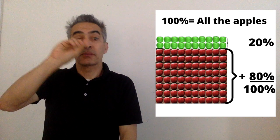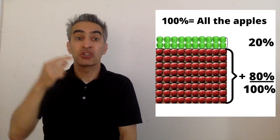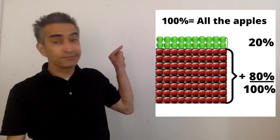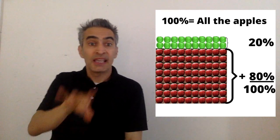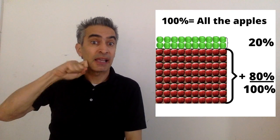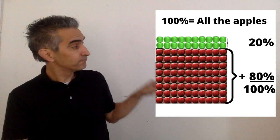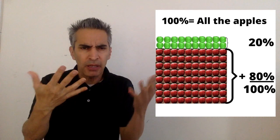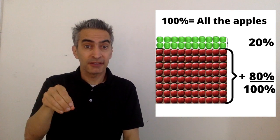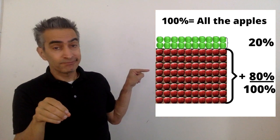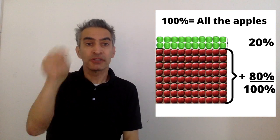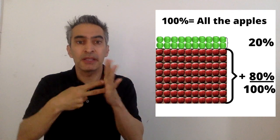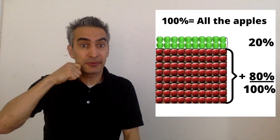Twenty percent of the apples are green, and eighty percent of the apples are red. If you total it up, that equals one hundred percent. One hundred percent represents all of the apples.